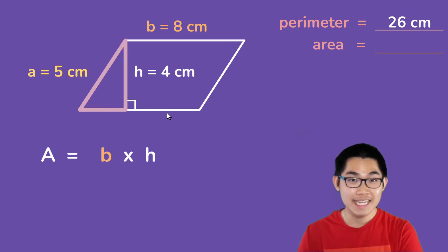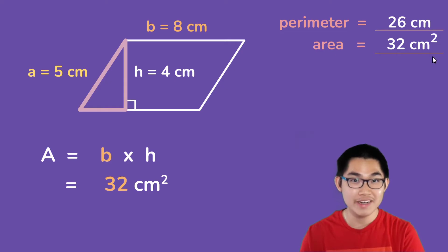And so as I said, the area is the base times the height. And so we know that the base is 8 centimeters, the height is 4 centimeters, and so the area is 8 times 4 which is equal to 32 centimeters squared. And so that's your area, the area of this parallelogram is 32 centimeters squared, and don't forget to put the number 2 up here because we found our area.